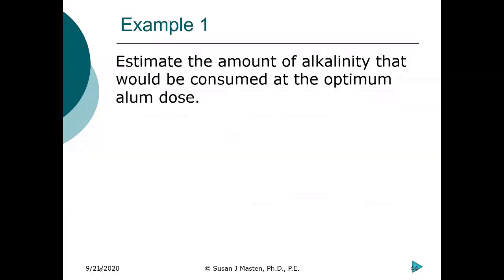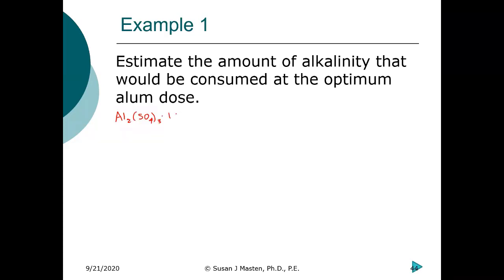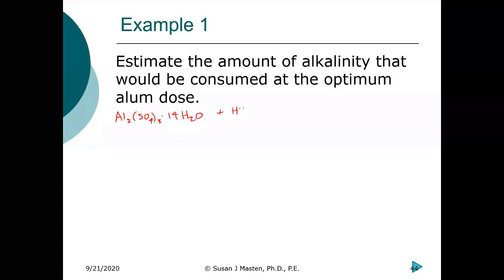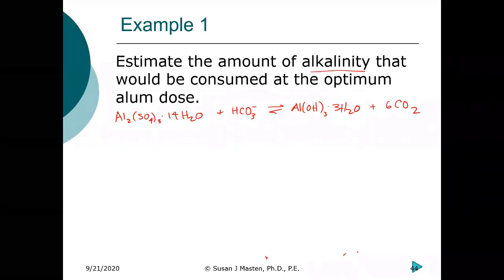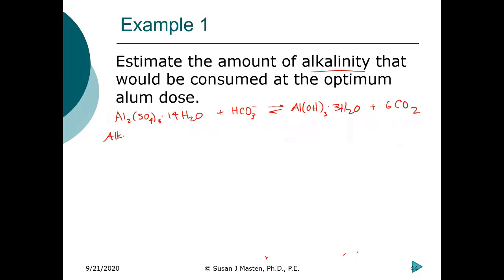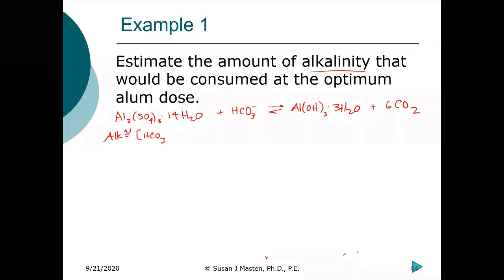We left off on Friday with the coagulation problem. We had stated that alum reacts with bicarbonate and forms aluminum hydroxide and six CO2s. The question is: how much alkalinity would be consumed? Alkalinity is approximately equal to the bicarbonate concentration.